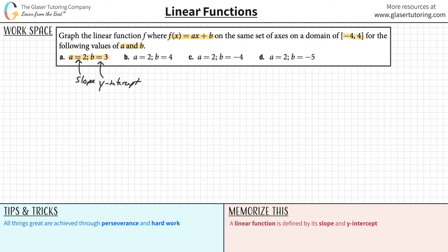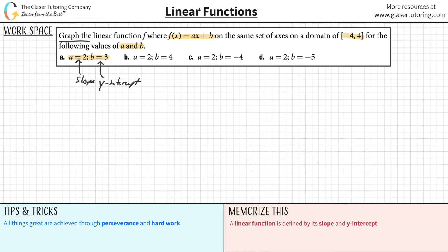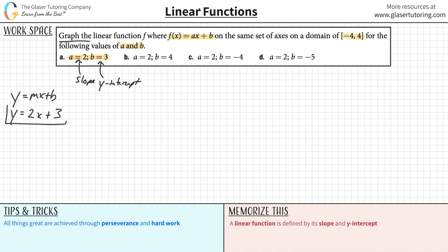Now what they want us to do is graph this thing. It says graph it. If you know the slope and the y-intercept, you can graph it — you can use your calculator or graph it on paper. What I'd actually suggest is rewriting this in your linear equation: y is equal to mx plus b. Let's plug in the slope of 2 and b of 3, so this is literally what you're looking to graph.